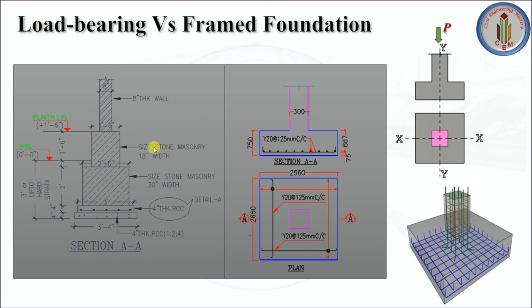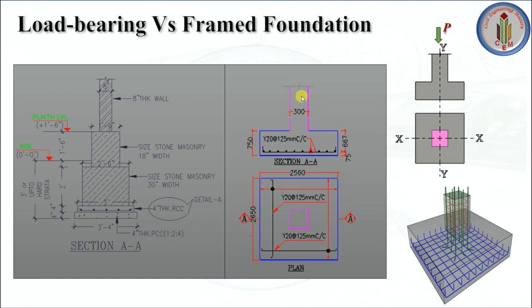For load bearing structure, we provide size stone masonry or stone masonry as a foundation. The foundation detailing includes PCC at the bottom, a small thickness of RCC above that, then masonry of different sizes, and then the wall above. For frame structure, we use a footing to transfer column loads. The column rests on top of the footing. In RCC framed structures there are many types of foundations: isolated footing, trapezoidal footing, combined footing, raft footing, and so on.